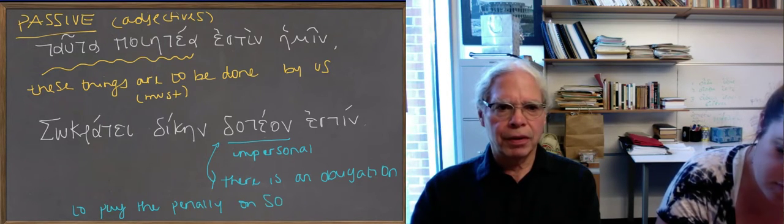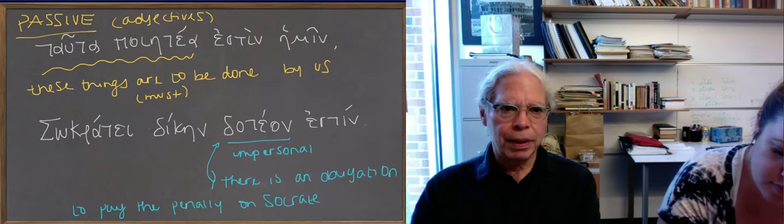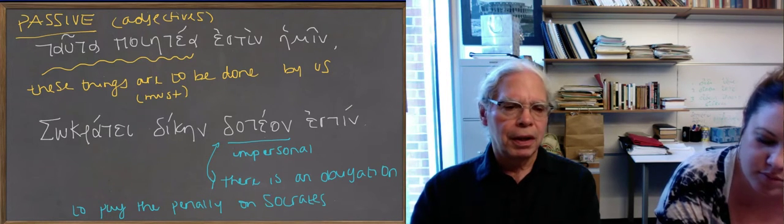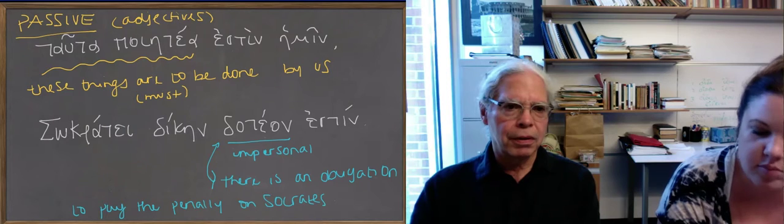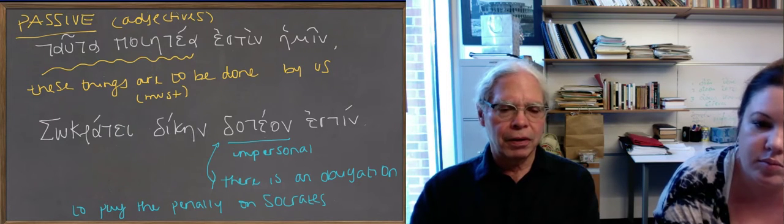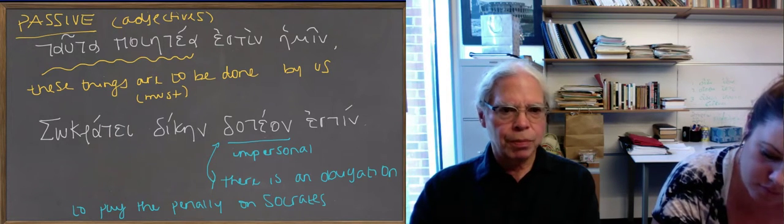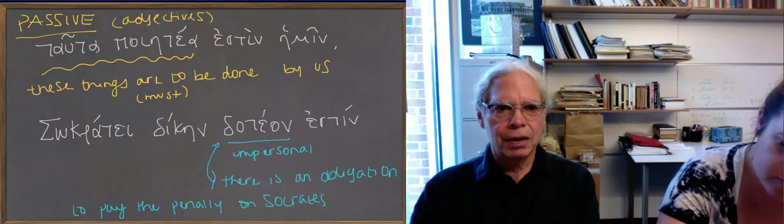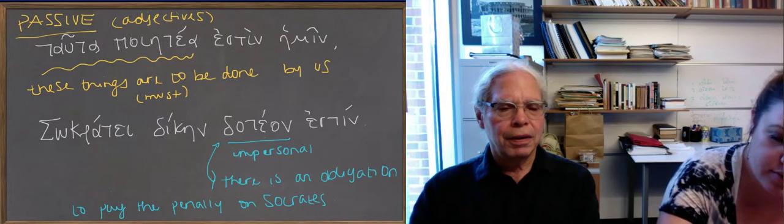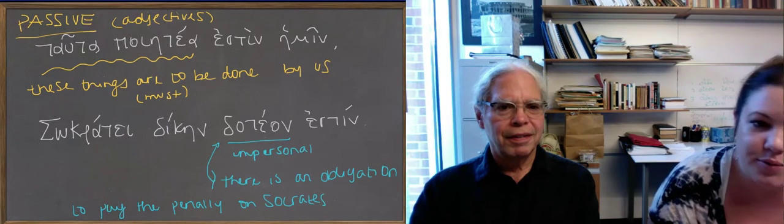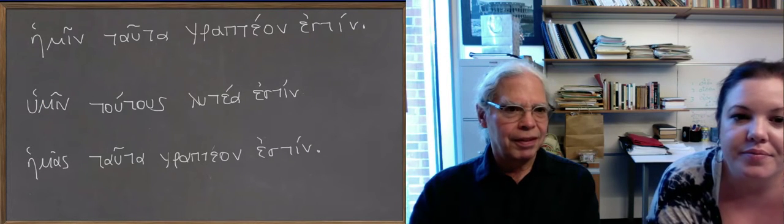So notice that it's active, it's not to be paid, the penalty to be paid. You've got a direct object of it, whereas in tauta poetea, it's an adjective that's passive. So let's look at some more examples.